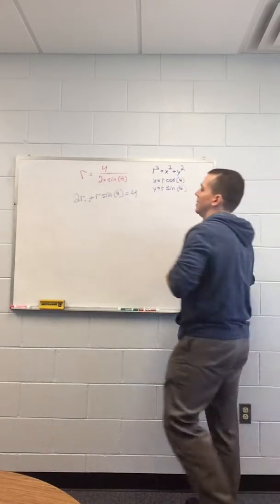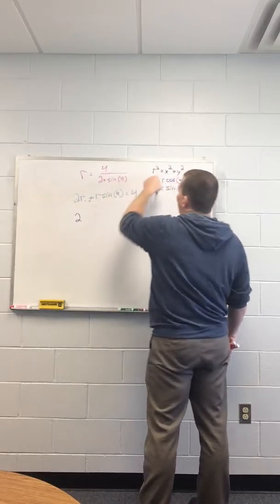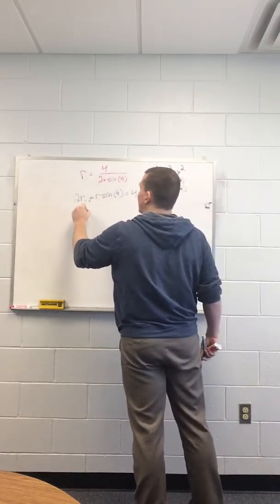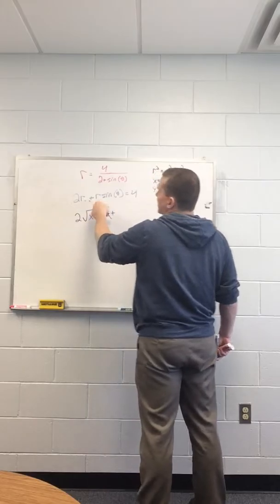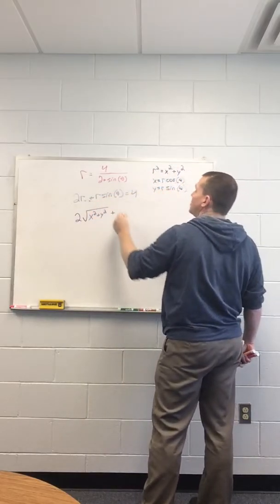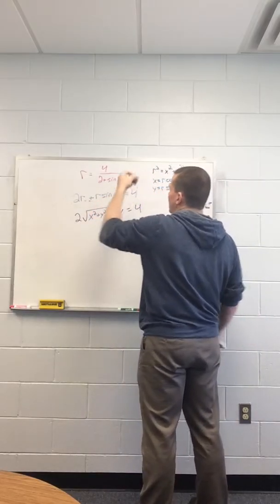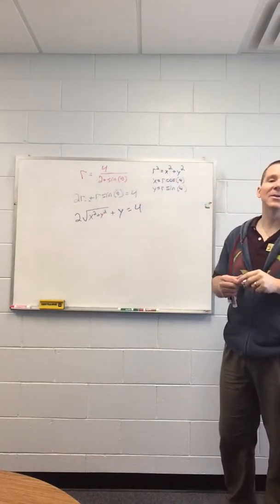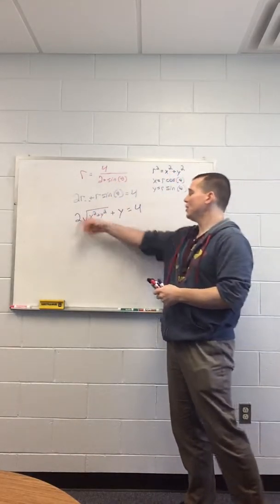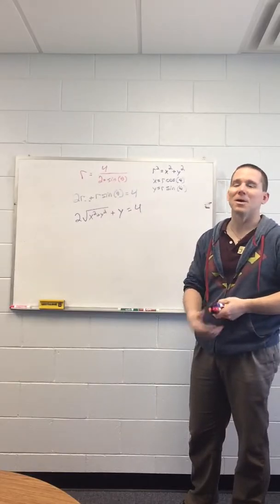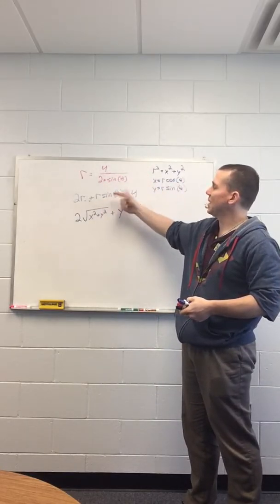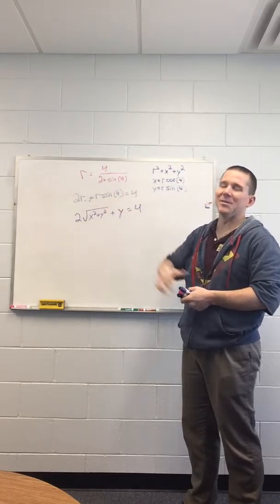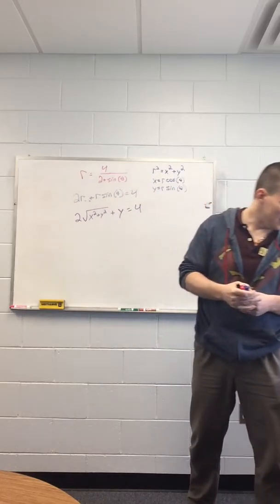You get 2R plus R sine theta equals 4. Now just convert. 2R, square root of both sides. R is just the square root of x squared plus y squared. R sine theta, plus R sine theta is y equals 4. And now you're done. As I've mentioned before, you can do more algebra to simplify this out if you want to. But for the purposes of the exam, doing this algebra here and then just doing the conversion and leaving it, that was completely fine.